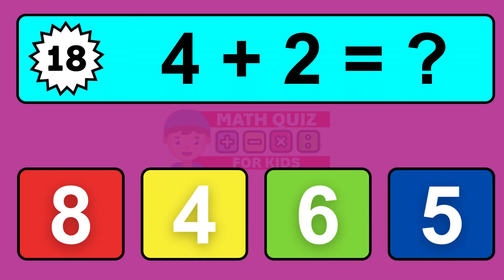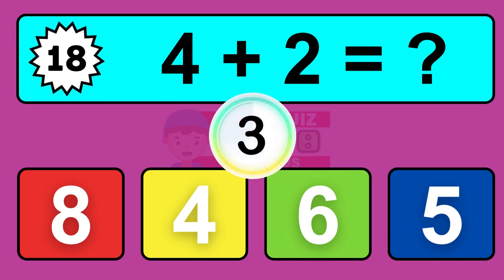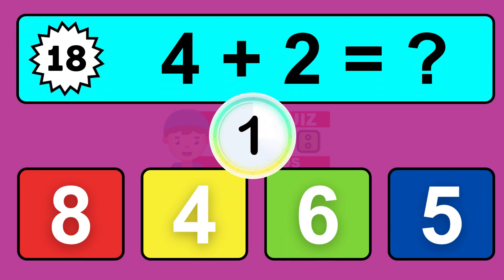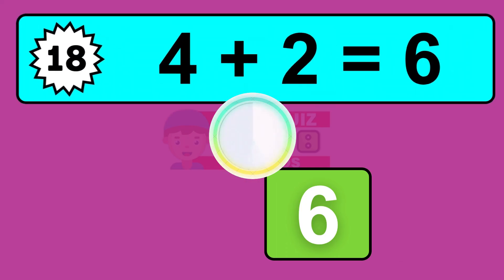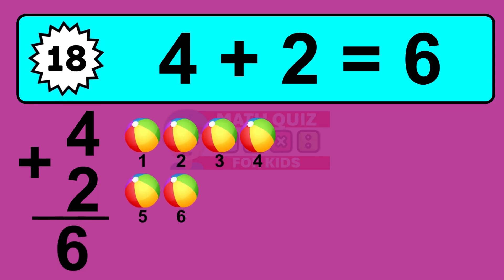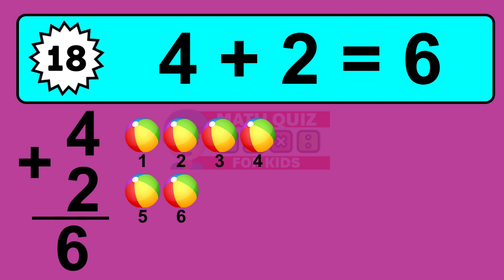Question 18. 4 plus 2 equals what? The answer is 4 plus 2 is 6. Let's count it: 1, 2, 3, 4, 5, 6.